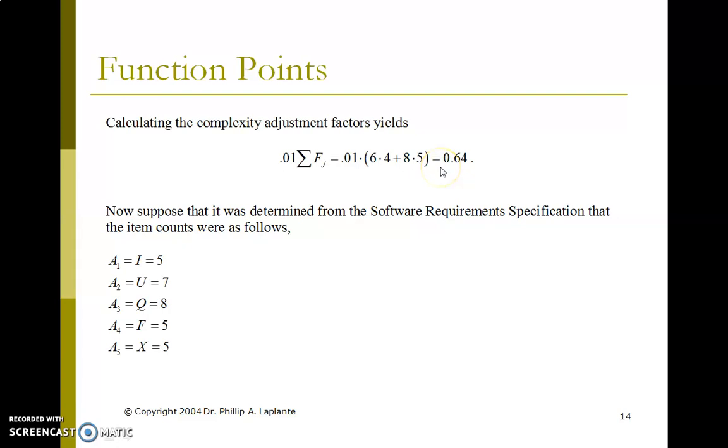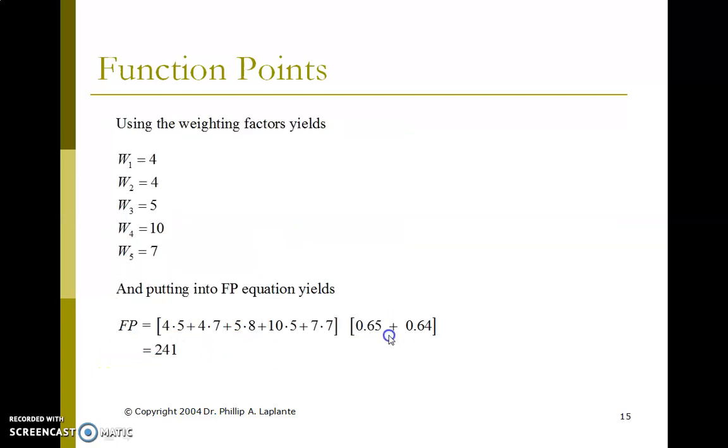According to the above information, the complexity adjustment factors yield 0.01 times sum of Fj equals 0.64. Now suppose it was determined from the software requirements specification that the item counts were as follows: A1 (I) equals 5, A2 (U) equals 7, A3 (Q) equals 8, A4 (F) equals 5, A5 (X) equals 5. Using the weight factors: W1 equals 4, W2 equals 4, W3 equals 5, W4 equals 10, W5 equals 7. Putting these into the FP equation gives the final function point value.